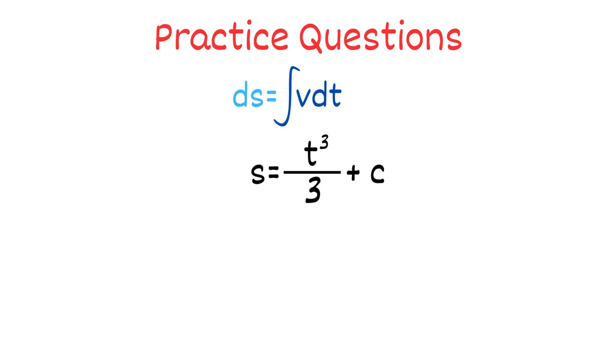Finally, using this, we can find the distance traveled after 5 seconds. We plug in the initial limit of time as 0 seconds and final limit as 5 seconds. We will get s = 5³/3 + c - 0³/3 + c.